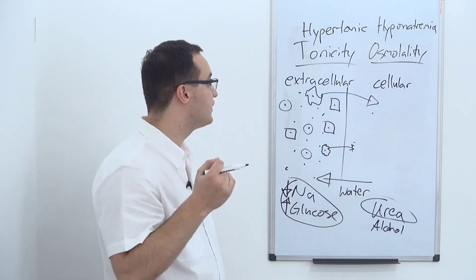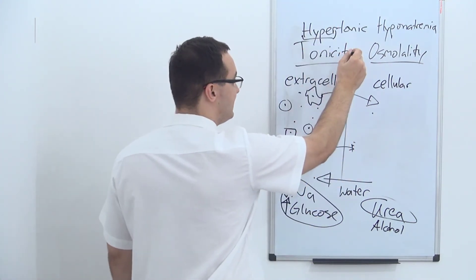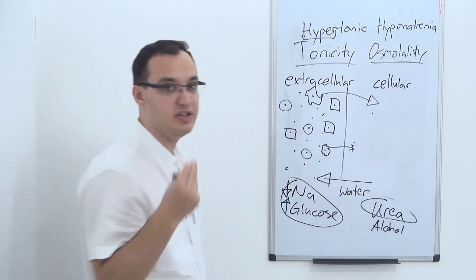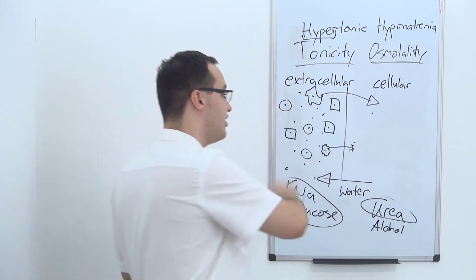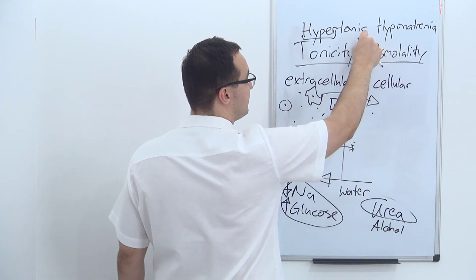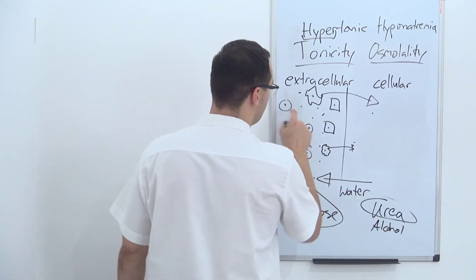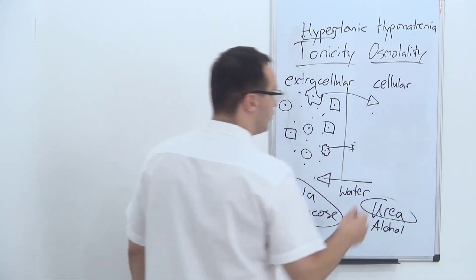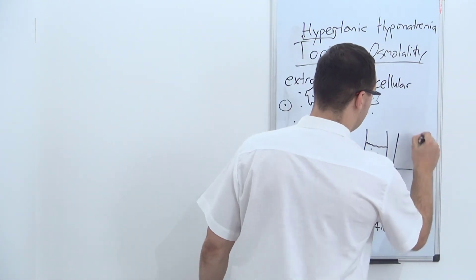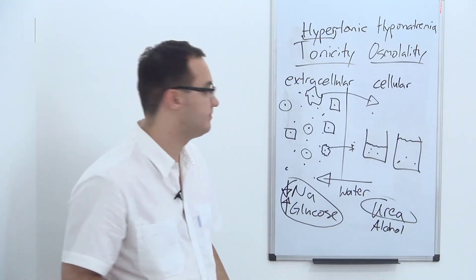So when you have a lot of glucose sugar, it can cause what's called hypertonic hyponatremia. 'Hyper' means a lot of tonicity — not osmolality — because glucose is a molecule that cannot move through the membrane. High tonicity means a high amount of molecules that cannot penetrate the membrane. Hypertonic hyponatremia is caused by high tonicity moving water into the extracellular space, decreasing the sodium concentration — just like in our glass example where more water diluted the same three sodium molecules.